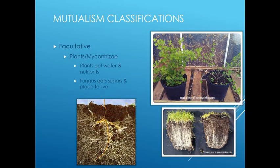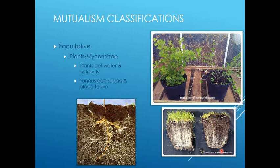But you can have facultative mutualisms too, where organisms do fine without the mutualistic interaction but probably do better when it exists. An example is plants and mycorrhizae — plants get water and nutrients from the fungus, and the fungus gets sugars from the plants. Here's a plant with mycorrhizae and one without — above ground root mass looks very poor without them. The root biomass of these grasses is really low without the right mycorrhizae. Plants can live without this fungus, but they do much better when they have it.